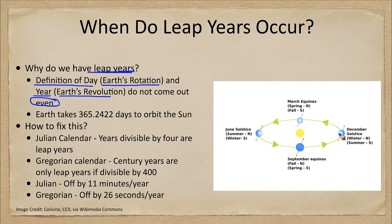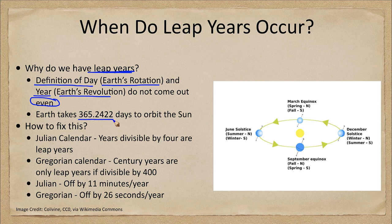When we measure this, it actually takes 365.2422 days for the Earth to orbit our sun. The difficulty is that we are off by almost a quarter of a day every year, and if we didn't do anything about that, the seasons would slowly change when they occur, because that quarter of a day keeps getting cut off and lost.